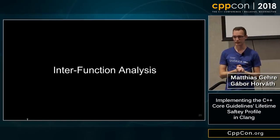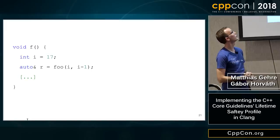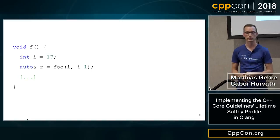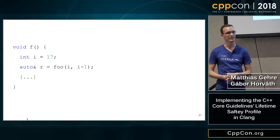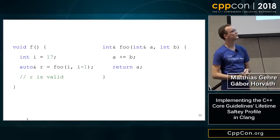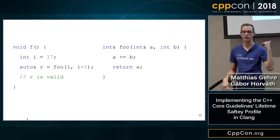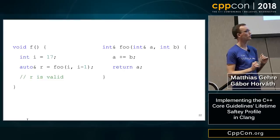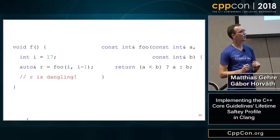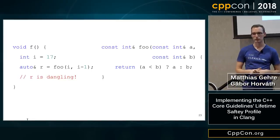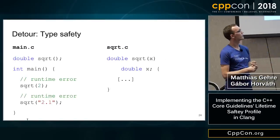Now interfunction analysis — this is where it gets really interesting because you need to reason across boundaries you're no longer looking at. Consider a function f that takes an integer i, calls foo with i and another parameter, and returns a reference r. Is r valid? It depends entirely on what foo does. If foo is like a plus-equals operator returning a reference to the first argument, that's fine. But if foo is like min — which can return either argument — things become unsafe. If we can't reason about it ourselves, how can the compiler?